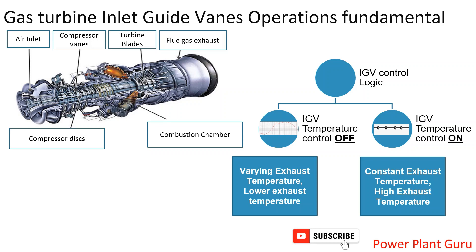If you increase the load, fuel is increased and temperature would go higher — but if you are already at the highest temperature limit, the IGV will increase its opening to maintain that temperature. Similarly, when reducing the load, you are reducing the fuel so temperature tends to fall, and the IGV will reduce its opening to maintain the original exhaust temperature.